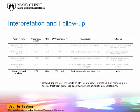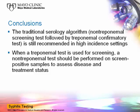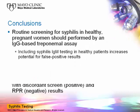In summary, the traditional serology algorithm, which includes a non-treponemal screening test followed by a treponemal confirmatory test, is still recommended in high incidence settings. However, the reverse algorithm is widely used due to advantages in specificity and laboratory workflow. When a treponemal test is used for screening, a non-treponemal test should be performed on screen-positive samples to assess the patient's disease and treatment status. A second treponemal test, such as the TPPA assay, should be used on samples with discordant screen-positive but RPR-negative results.